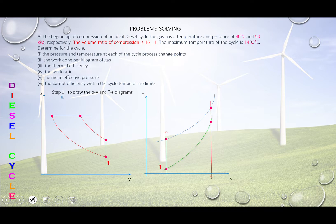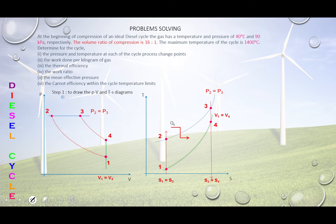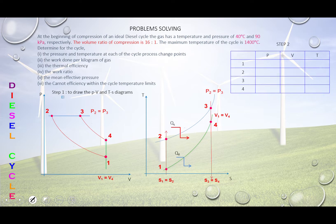Placing all four points on both the PV and TS diagrams: point one is at the lowest pressure, and moving in the clockwise direction we have points two, three, and four. The isentropic processes are one-to-two and three-to-four. Heat supply is two-to-three, since entropy increases, and heat rejected is four-to-one. The arrows move in the clockwise direction.